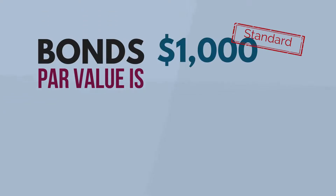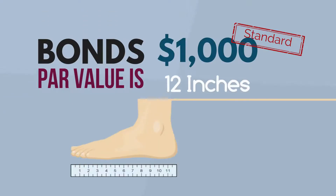Bonds are issued at a par value of $1,000, which is the standard. Just like the standard for a foot is 12 inches, a bond is $1,000.